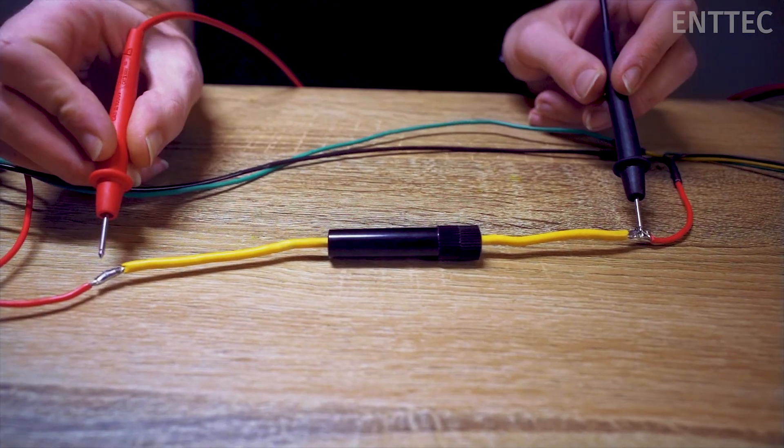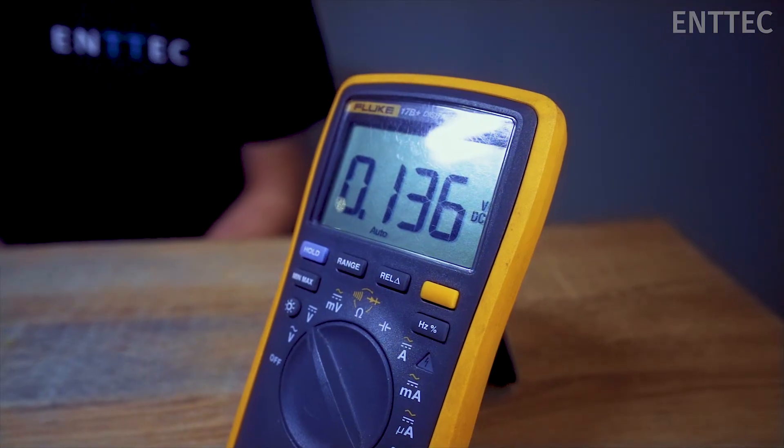Similarly we can set up our glass fuse holder and measure in the same way. For this setup we're seeing a voltage drop of just under 150 millivolts.